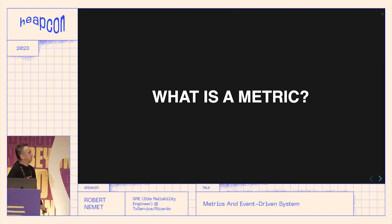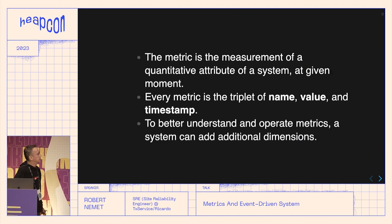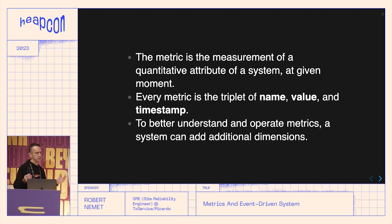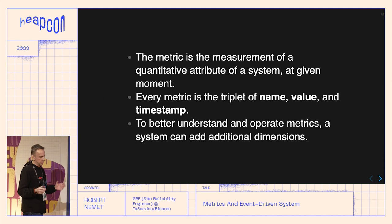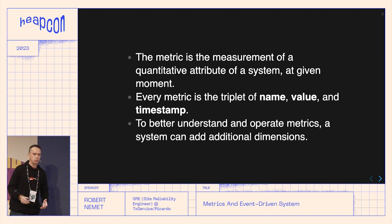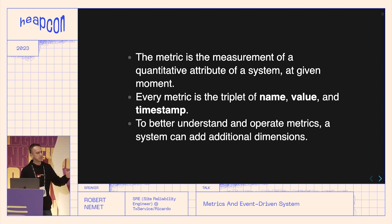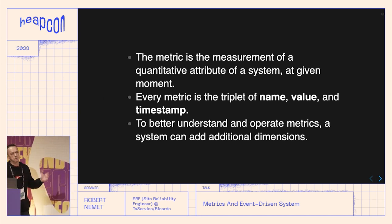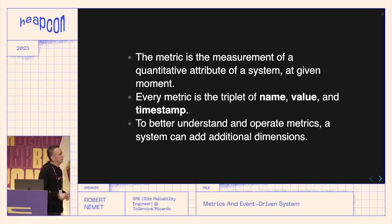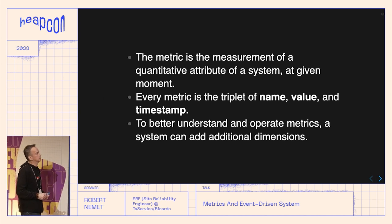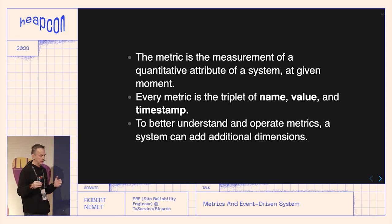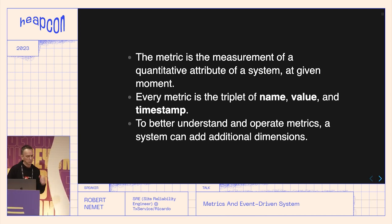Since the dawn of humankind we've measured things. A metric is a measurement — it's a quantitative attribute. It has a name, a value, and a moment when we measure it, because things change over time. For example, when you are six years old you might be one meter tall, and six months later one meter five centimeters. That moment of measurement is very important because that's when the information is created and given its value and context.